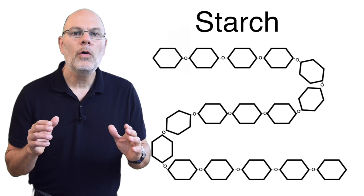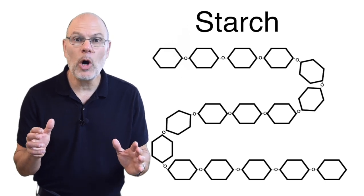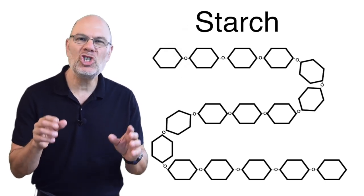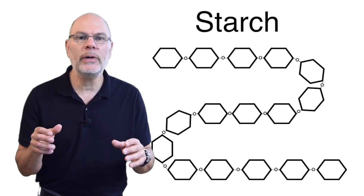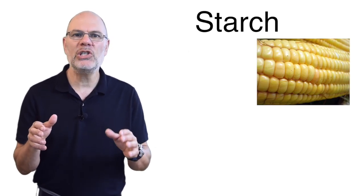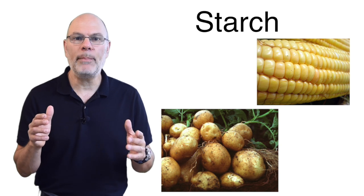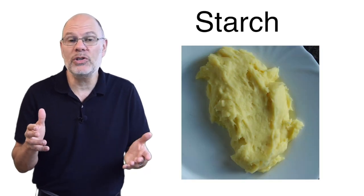For long-term storage of carbohydrate energy, plant cells chain together hundreds or thousands of glucose molecules and create starch. It's in plant parts like seeds and roots, and it's found in foods like bread, pasta, potatoes, and rice.